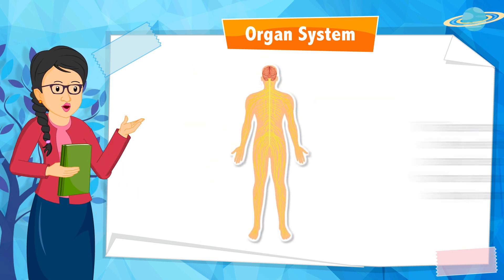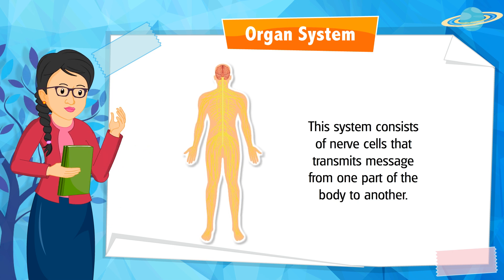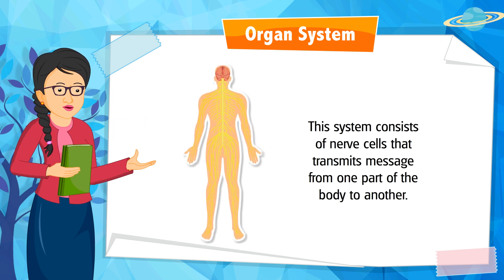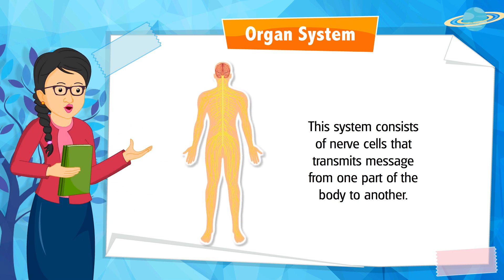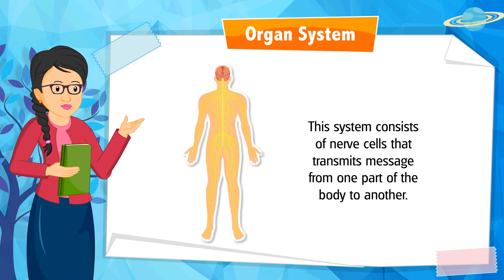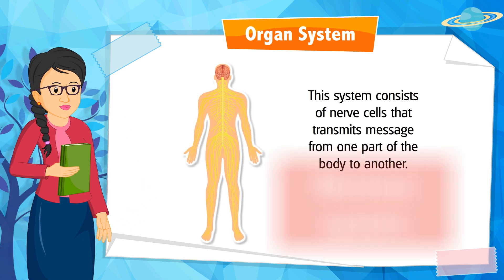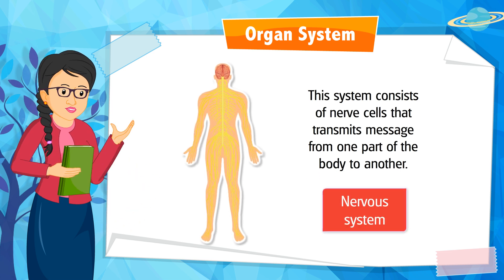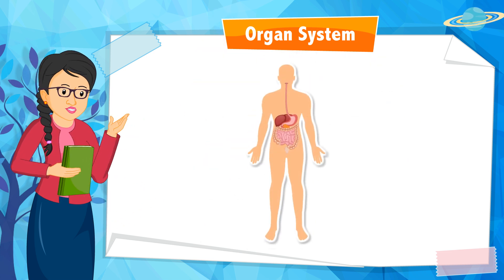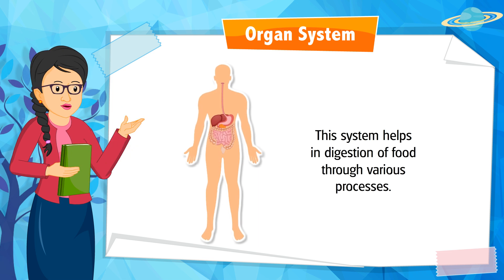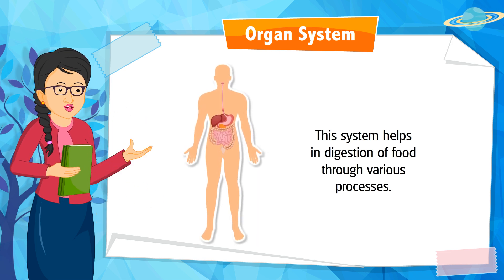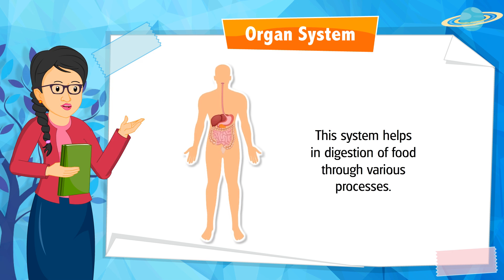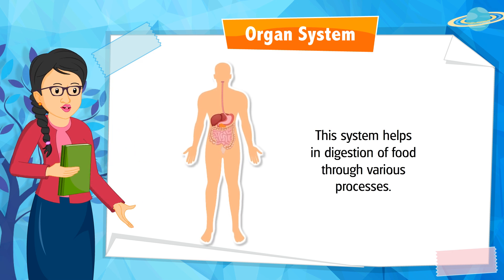This system consists of nerve cells that transmit messages from one part of the body to another. Can you identify it? It is the nervous system. This system helps in the digestion of food through various processes. Can you identify it? It is the digestive system.